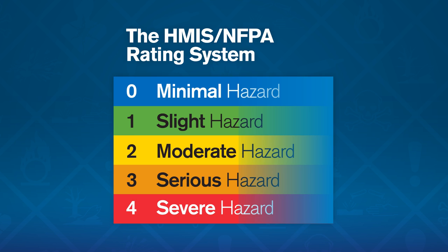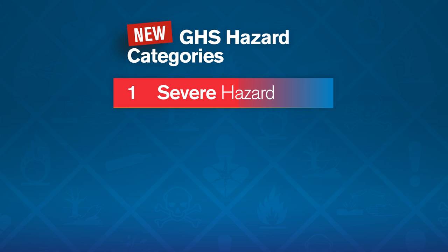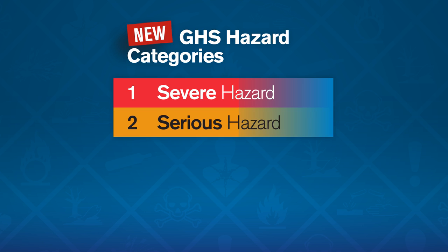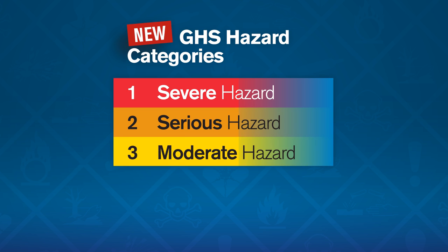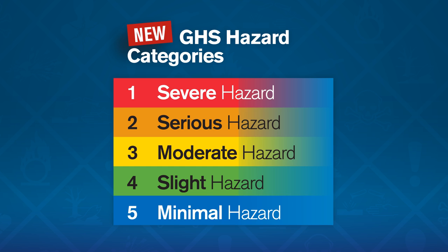Another big GHS change: the hazard ratings will reverse order. The new GHS hazard categories are: 1. Severe Hazard, 2. Serious Hazard, 3. Moderate Hazard, 4. Slight Hazard, 5. Minimal Hazard.